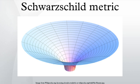The solution is a useful approximation for describing slowly rotating astronomical objects such as many stars and planets, including Earth and the Sun. The solution is named after Karl Schwarzschild, who first published the solution in 1916.